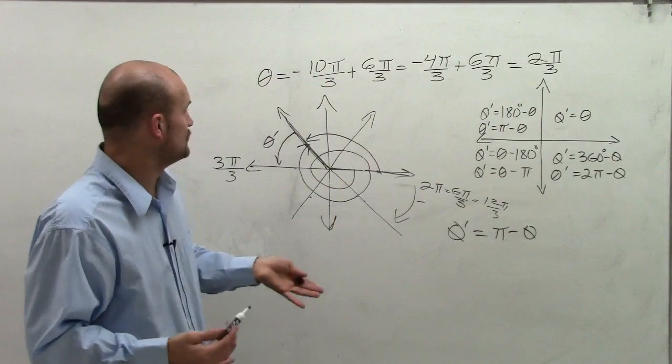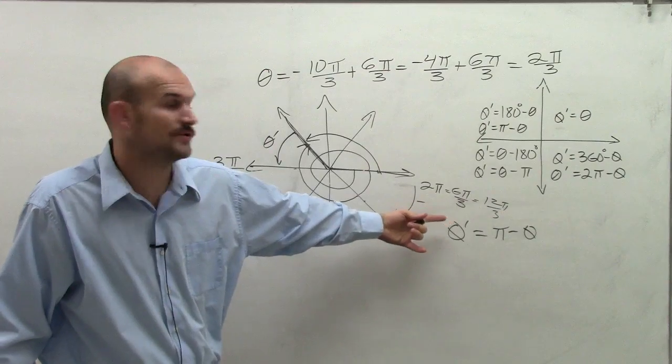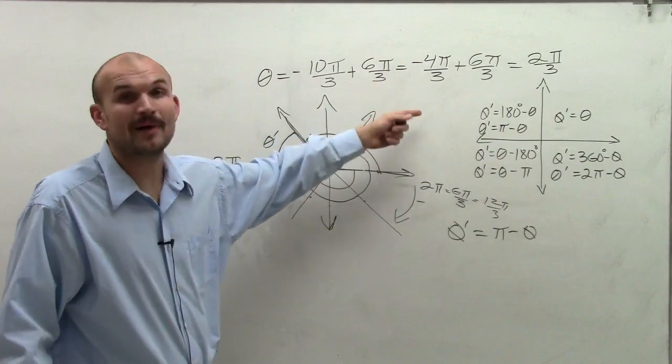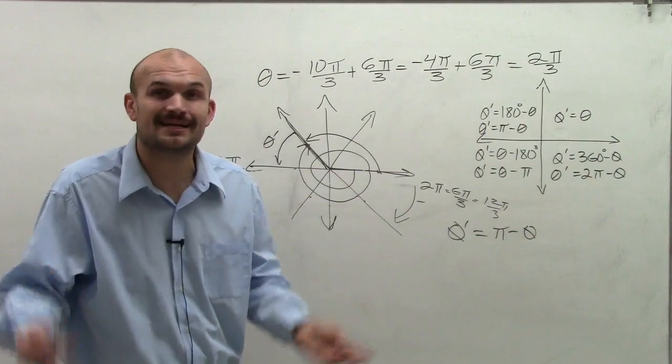And what you'll notice, if you're going to use negative 10 pi over 3 minus pi, you're not going to get an acute angle. If you use negative 4 pi over 3 minus pi or pi minus 4 pi over 3, you're not going to get an acute angle.